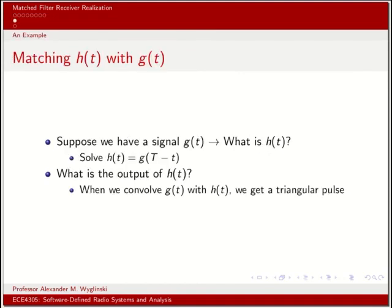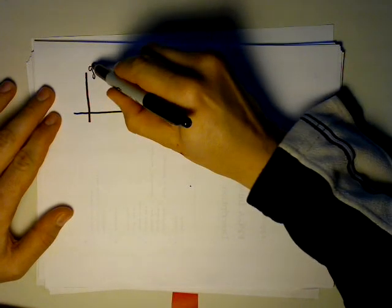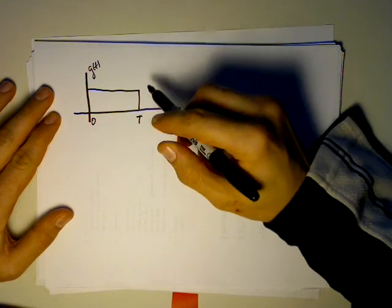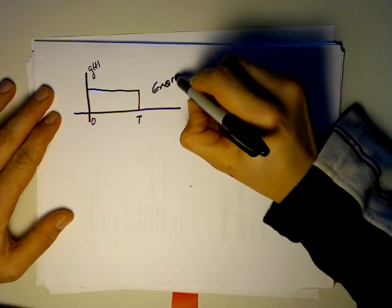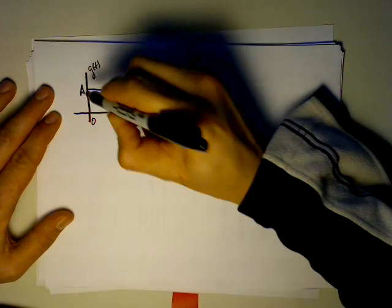Let's do a quick example. Suppose I have an h(t). I want to create an h(t) that matches with a g(t). What's the solution? How do we make a matched filter receiver realization given two possible pulses? Suppose g(t) looks like a rectangular wave from 0 to T. It has energy equal to a²T because it has an amplitude a.